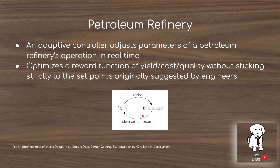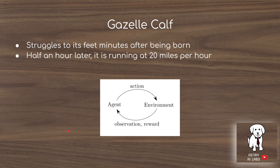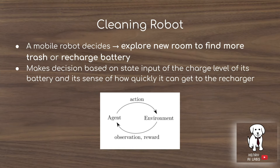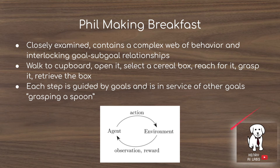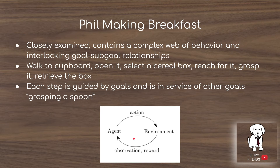A great example of this kind of control system is DeepMind and Google's data center cooling bill reduction, which is linked in the description. A gazelle calf is born and half an hour later learns to run at 20 miles per hour — the agent sends actions as forces to apply to its joints, receives rewards for standing up or falling down, and the observation is the next state describing its body parameters. A cleaning robot must decide whether to explore new rooms to find more trash or go back to recharge its battery — if it runs out of battery it receives a minus-one reward, and it's also rewarded for finding trash. Phil making his breakfast fits into this agent-environment framework, except it has a much more complex web of behavior and interlocking goal and sub-goal relationships.